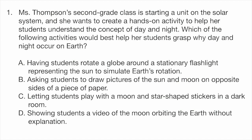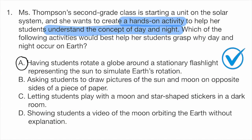When we look at the problem, there are really two things we need to answer here. We need to have a hands-on activity, and students need to understand the concept of day and night. The only option that matches both criteria is option A. Students are rotating a globe — this is the hands-on portion — and doing that around a stationary flashlight, which represents the sun. As they rotate the globe, they can see that half of the globe has day and the other half has night.